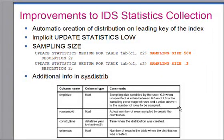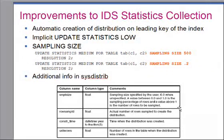You can specify the sample not only as an absolute number of rows but also as a percentage. Any number between 0.00 and 0.99 will be treated as a percentage, whereas absolute numbers will be treated as number of rows.